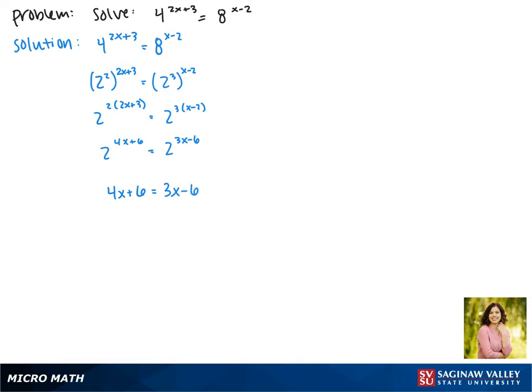Subtracting 3x from both sides gives us x plus 6 equals negative 6. And then subtracting 6 from each side gives us x equals negative 12.